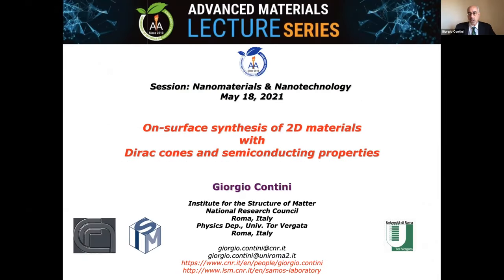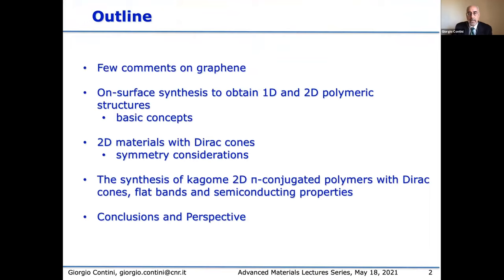On-surface synthesis to obtain two-dimensional materials that present Dirac cones and semiconducting properties. Here is the outline of my talk. I will start with a few comments on graphene, then give some basic concepts on surface synthesis to obtain one and two-dimensional polymeric structures, then some symmetry considerations on 2D materials that present Dirac cones, and at the end our results of the synthesis of a two-dimensional pi-conjugated polymer that presents Dirac cones, flat bands, and semiconducting properties, followed by conclusions and perspectives.